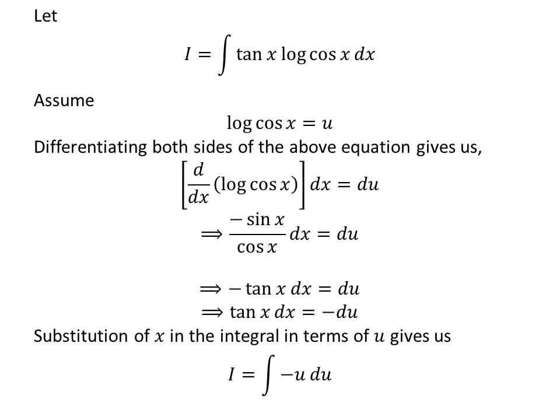Substitution of natural log of cosine of x by our assumed value u and tangent of x times differential of x by minus differential of u in the integral i gives us i is equal to integral of minus u with respect to u.